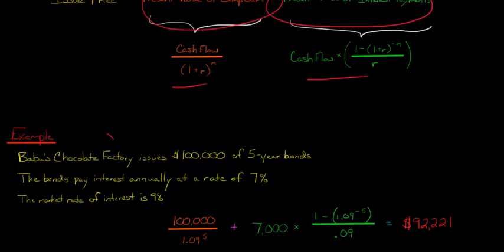Let's say that Babu's Chocolate Factory issues $100,000 of five-year bonds. The bonds pay interest annually at a rate of 7%. That's the stated rate or coupon rate. So there's going to be $7,000 a year in interest. We've got that in our formula here from above. And the market rate of interest for similar bonds happens to be 9%. So we do the calculations, and we figure out that our issue price of the bonds is $92,221. Now that is going to be the initial carrying value.